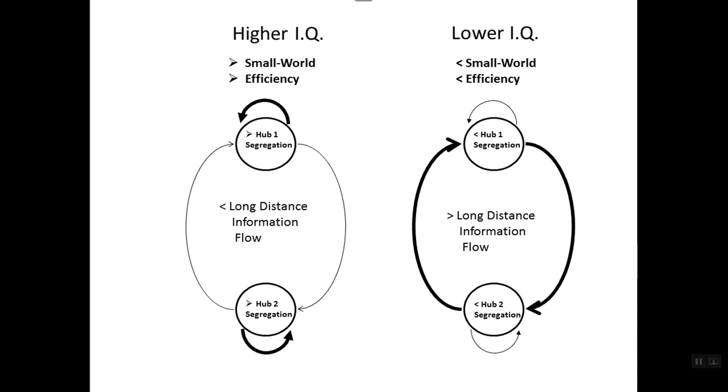There is short and long distance communication going on all the time in the brain, but it's a matter of balance between local information processing and minimizing the long distance communication. The lower IQ subjects rely a lot on the less efficient long distance information flow compared to the higher IQ subjects. You can measure this using EEG.